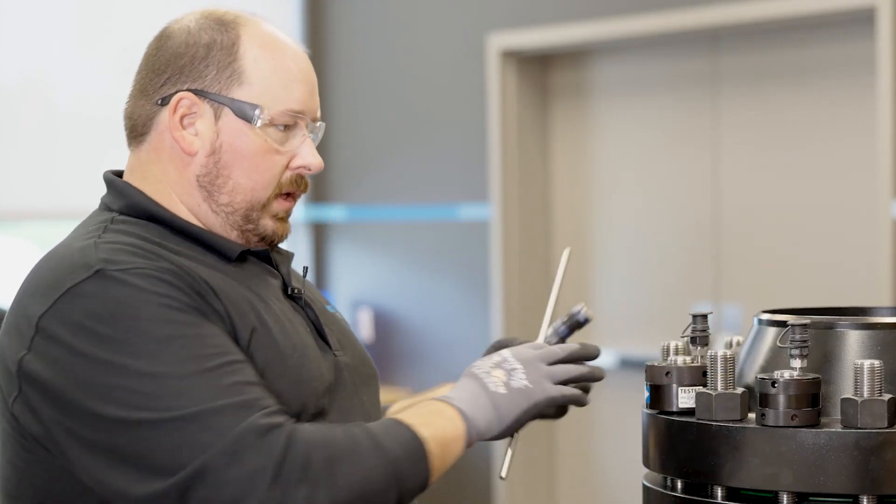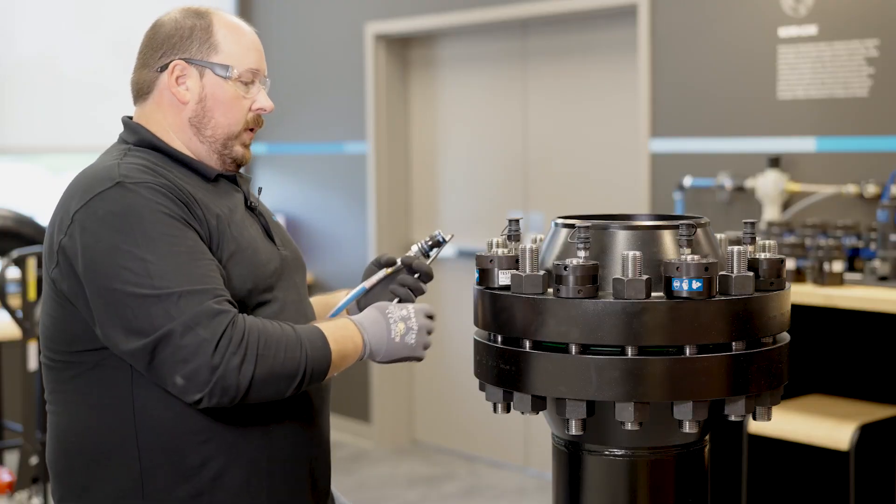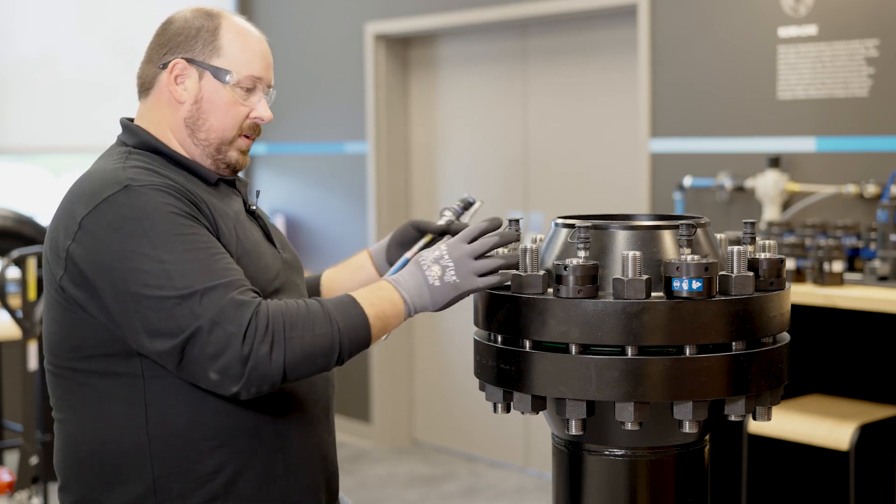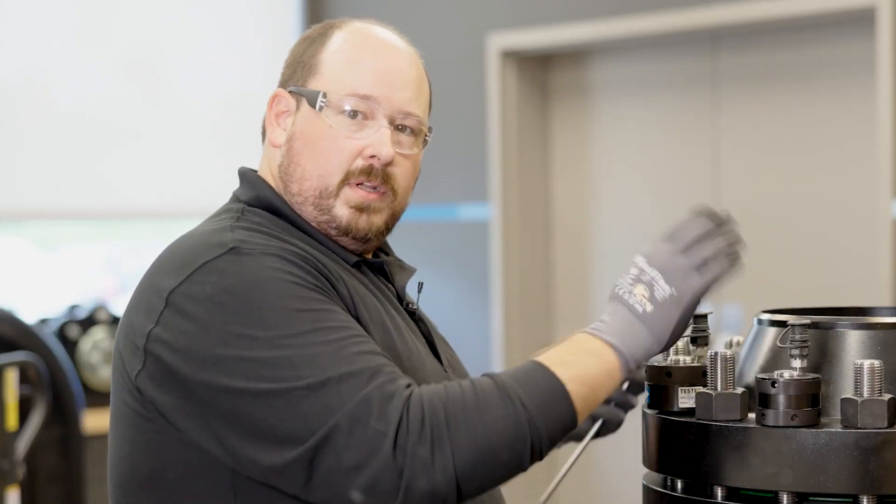On a flange, typically we would do 100% coverage, but we wanted to show you one by itself just so you know you can do them one at a time. But typically on a flange, you would do all 100% at once.